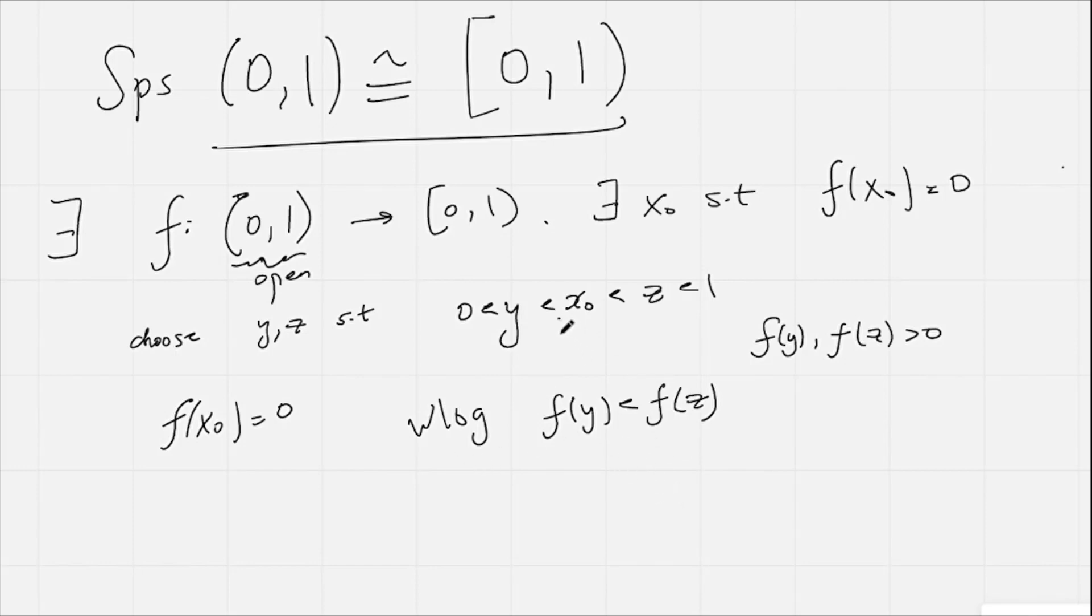And now what we're going to do is focus on this part of our inequality, x₀ being less than z. Now, because f is a continuous function, that means we can obtain any real value between f(x₀) and f(z). So, in other words, there exists some ψ, which is in between x₀ and z, such that f(ψ) is equal to...